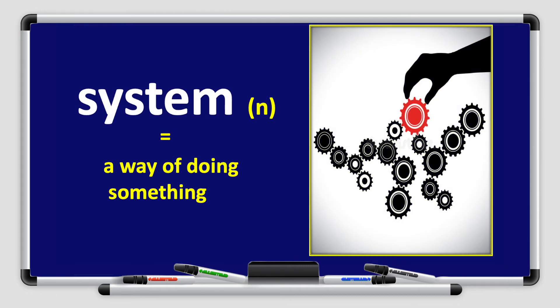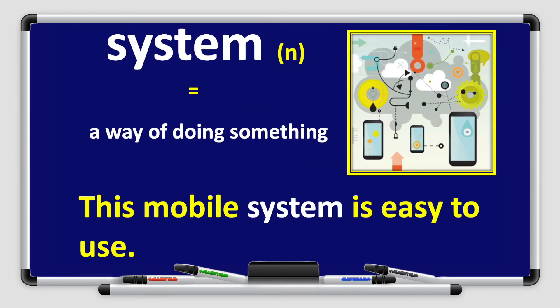System. System is a noun — it means a way of doing something. This mobile system is easy to use.